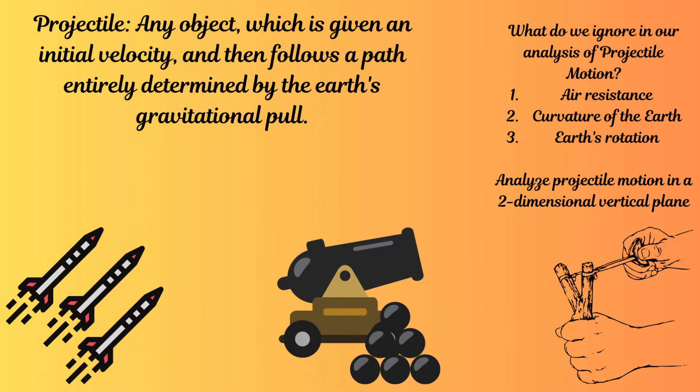What exactly is a projectile? You can understand it as any object which is given an initial velocity — like Alex's ball — and then follows a path determined entirely by the earth's gravitational pull. To make our lives easier, we ignore the effects of air resistance, and we also consider the gravitational field as parallel rather than radial, ignoring the earth's curvature and rotation.